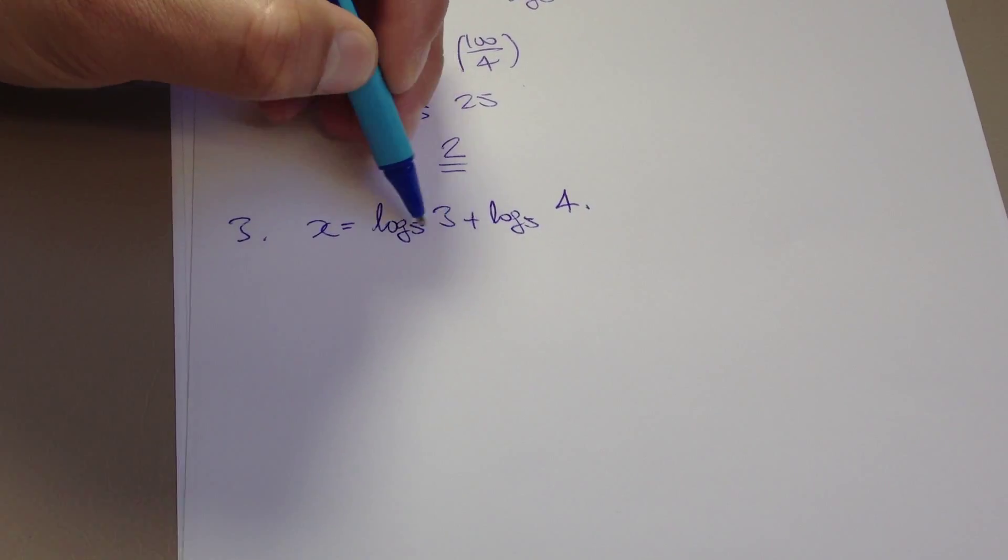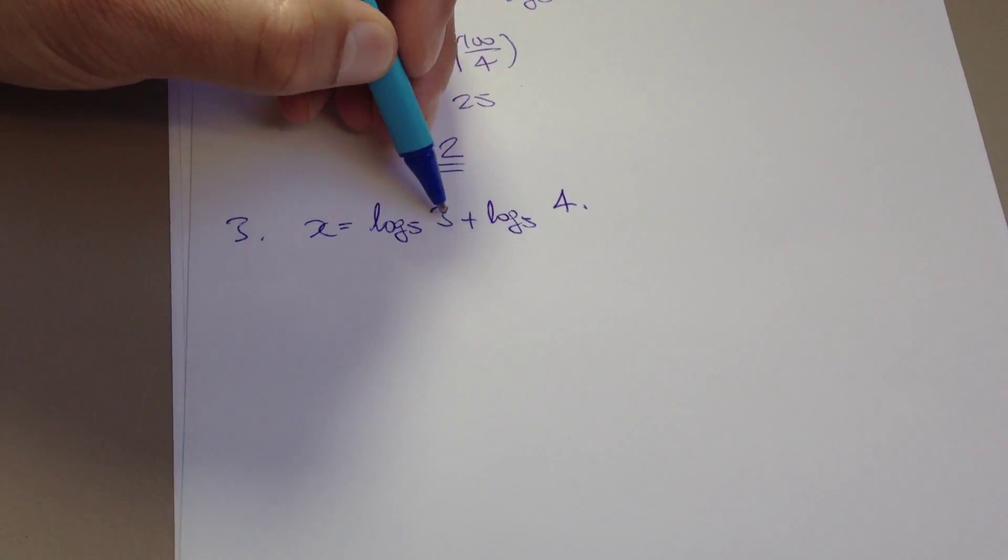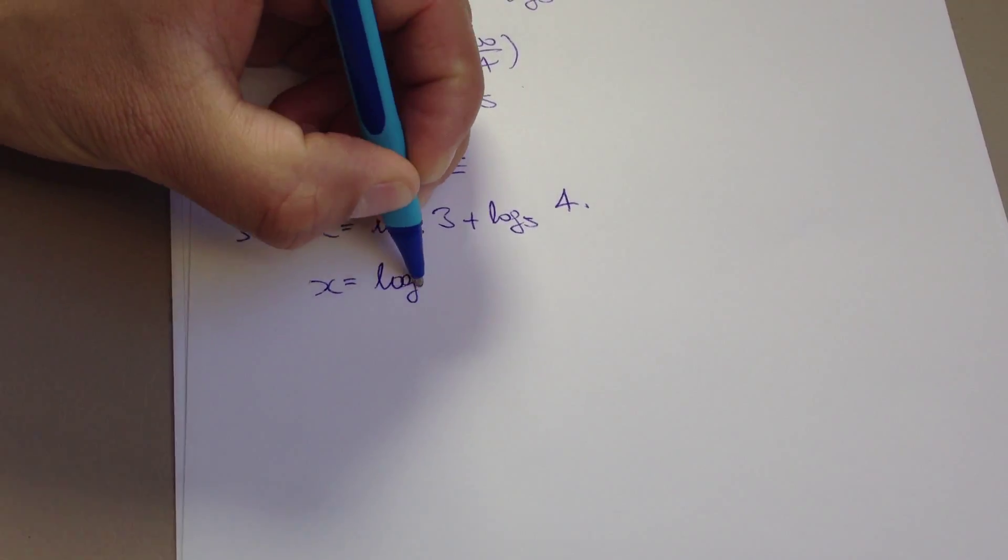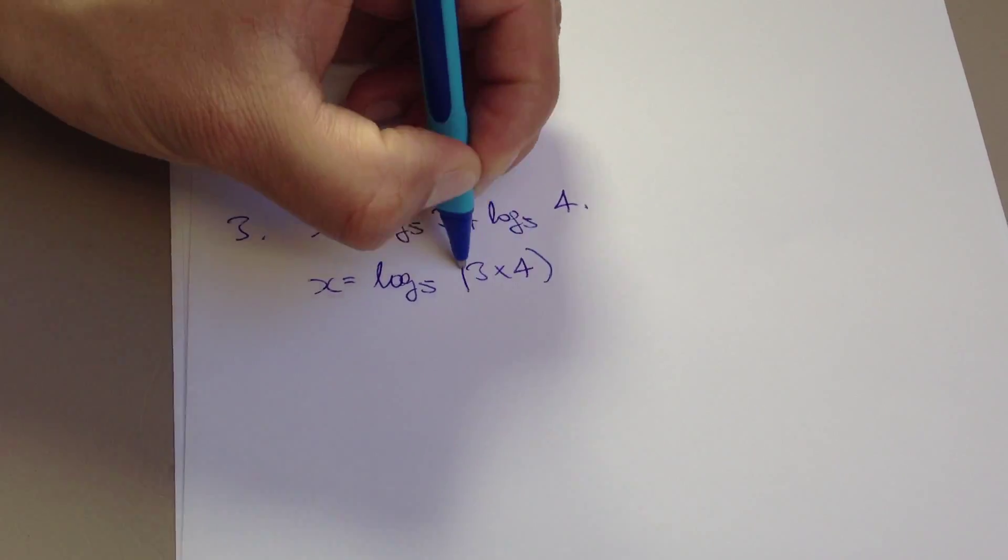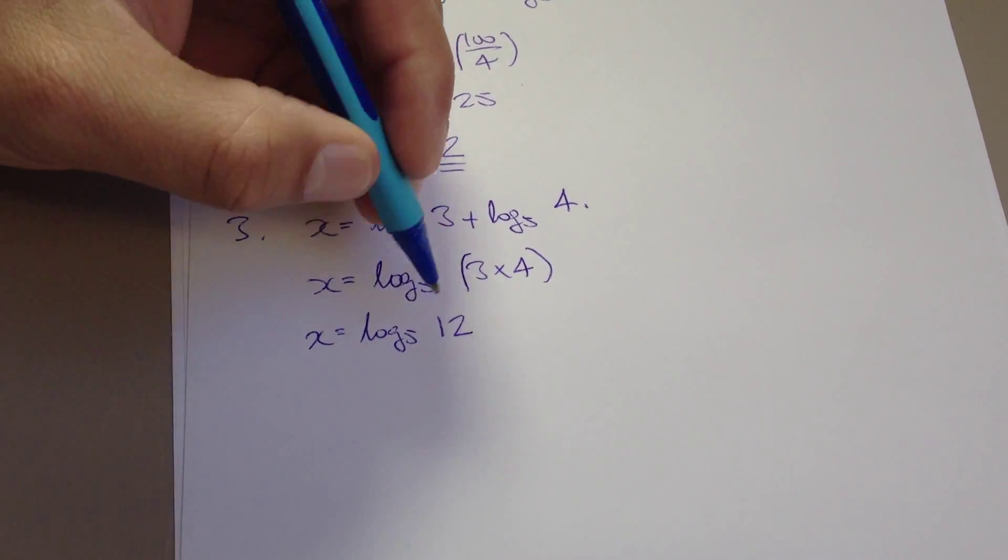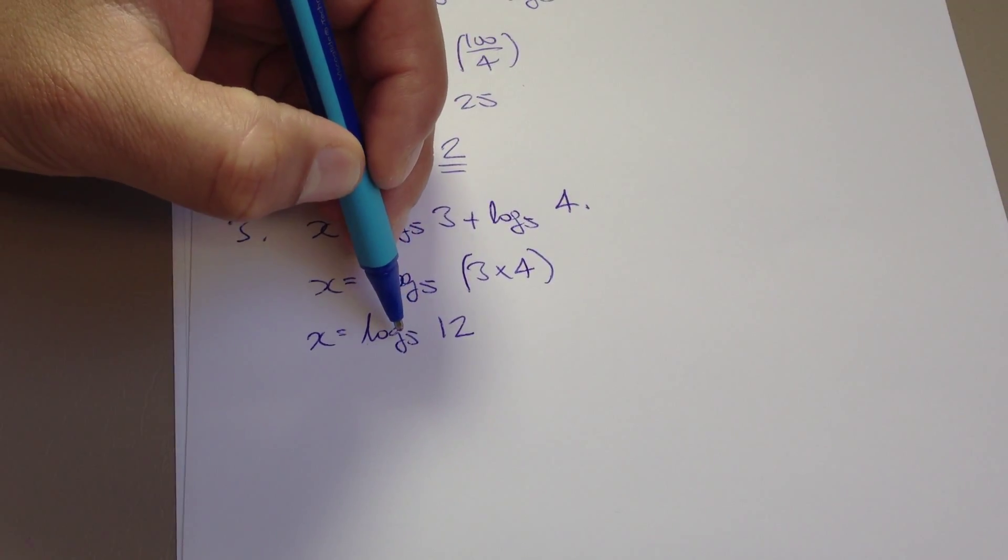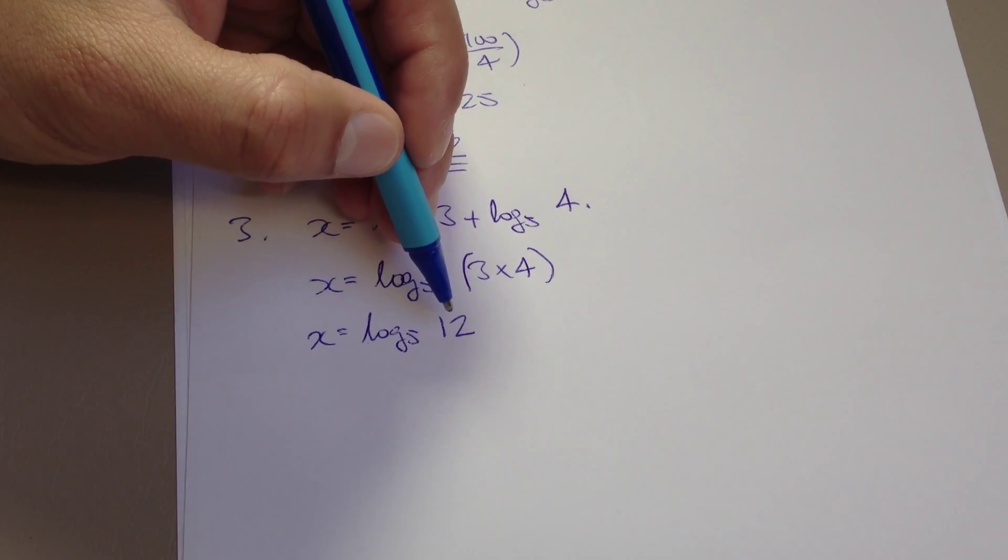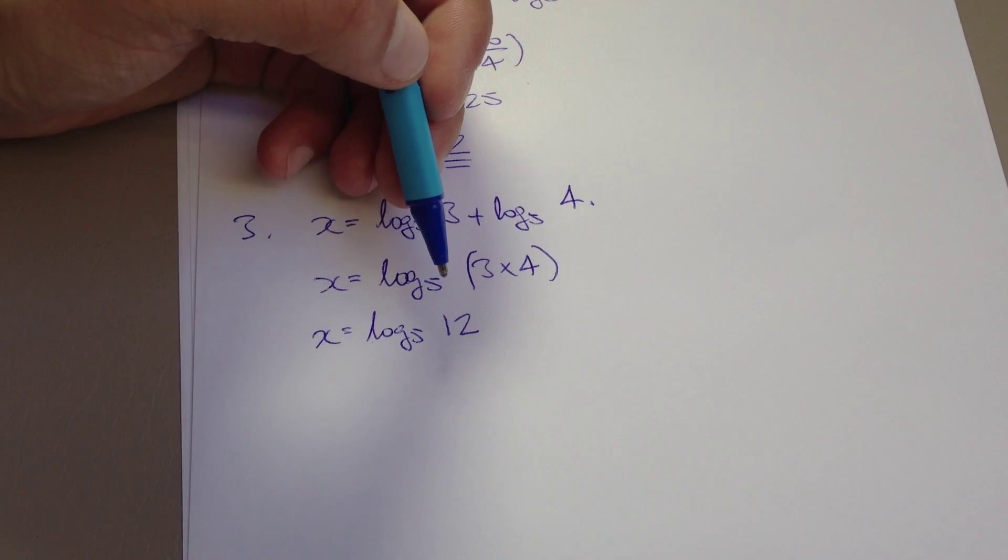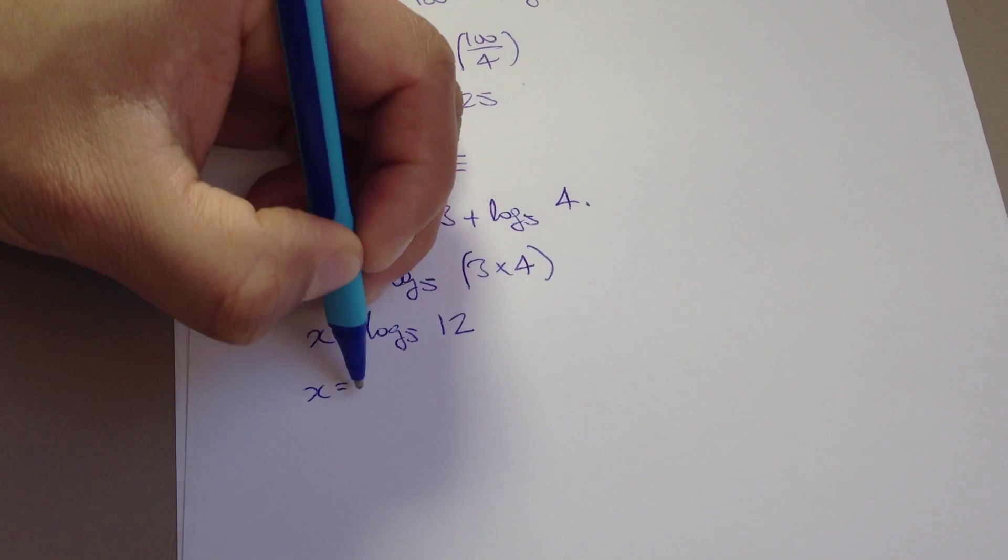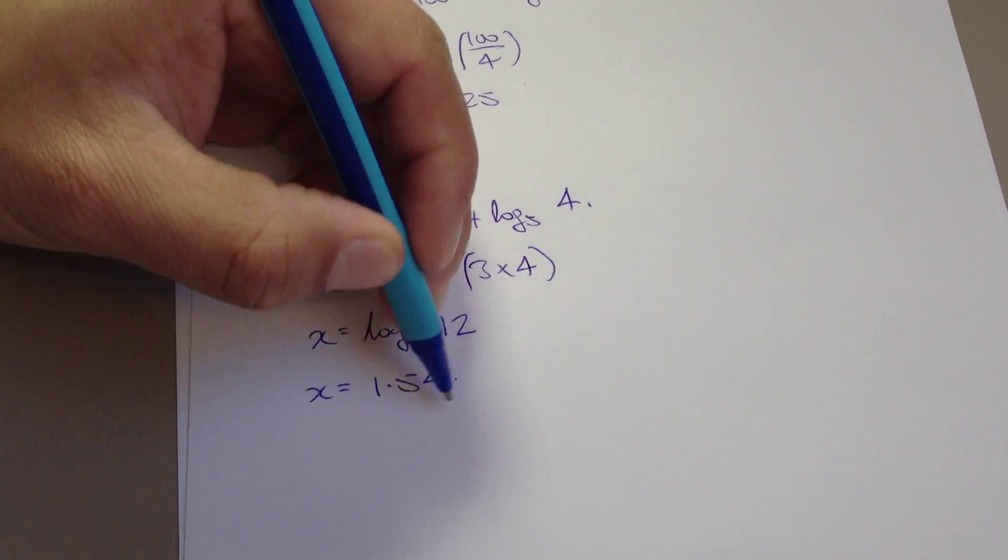Well, once again, we have the same base in each case, and it's an addition. So what we'll do is log to base 5 of 3 multiplied by 4, which is obviously log to base 5 of 12. Now, this question is asking us 5 to the power of what number will give me 12? Now, off the top of my head, I genuinely don't have a clue what that would be. So plugging that into the calculator, I get 1.54.